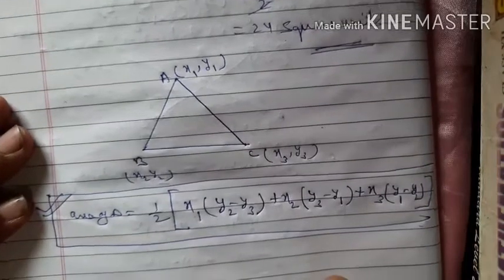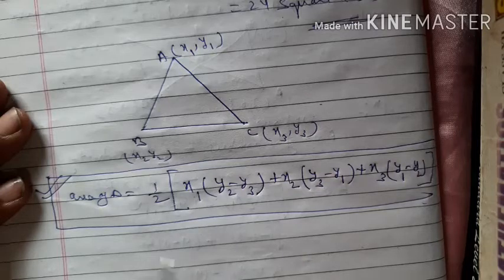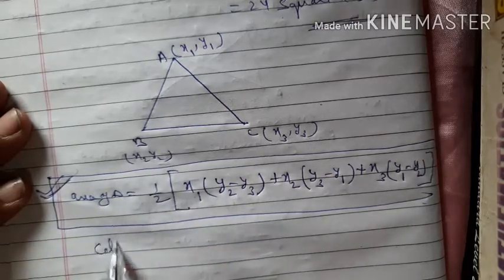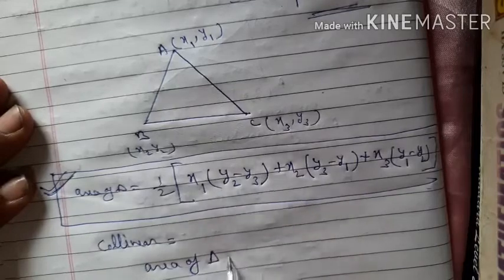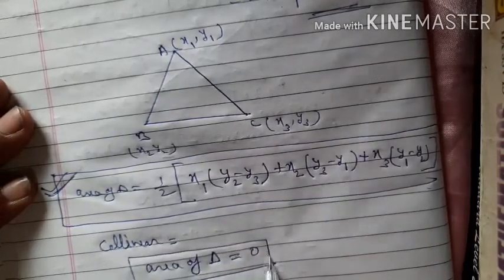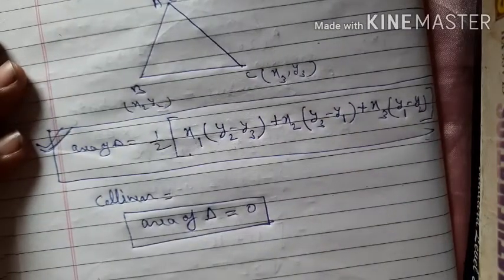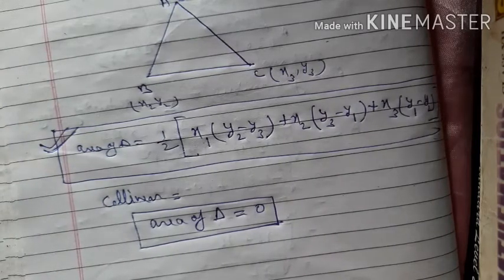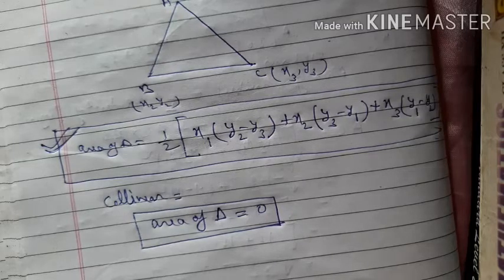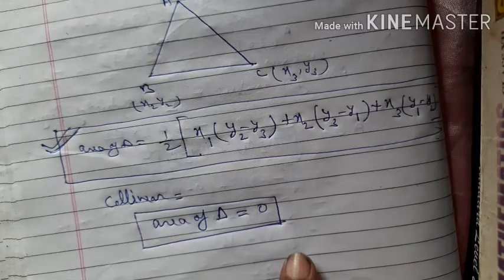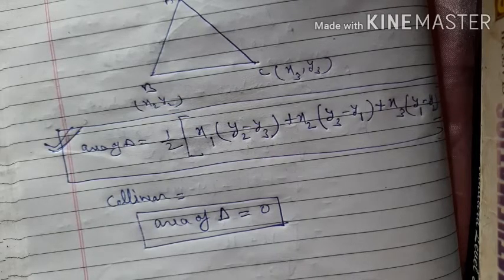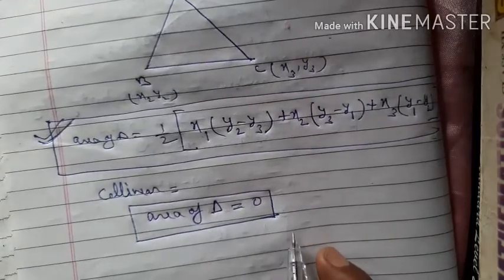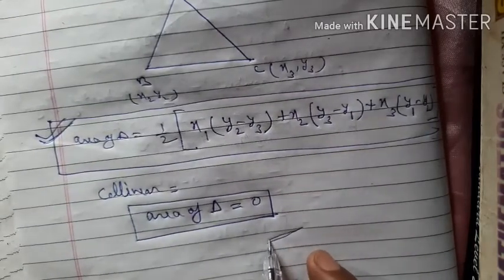Remember this triangle area formula. It is also useful for collinearity — if the area of triangle formed by three points comes out to 0, the points are collinear. Sometimes questions give that points are collinear and ask to find value of k; set area = 0 and solve. Note that this topic has been deleted from the board syllabus this time, but the formula is worth knowing.